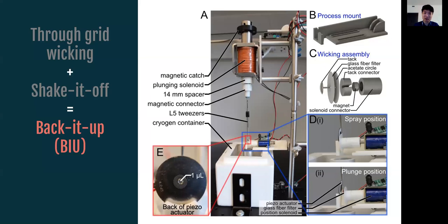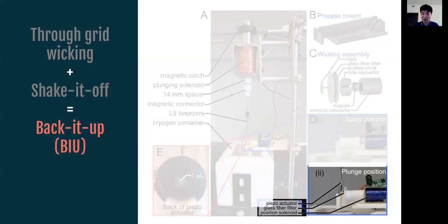So what we wanted to do now is combine this through-grid wicking technology together with the Shake It Off device to make a new device called Back It Up, because now the filter paper is coming from the back of the grid, and then you're spraying your sample in the front of it. So this is pretty much similar to what I had before, so I'd like to focus your attention on the arrangement of the grid as well as the filter paper. So now we have the filter paper that has been reintroduced, and that is placed behind the grid, while the sample is actually applied from the front using this piezo.